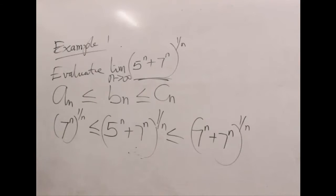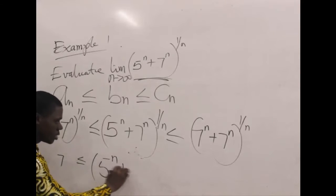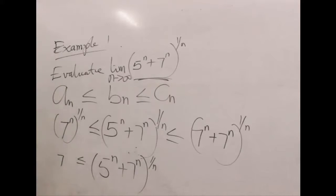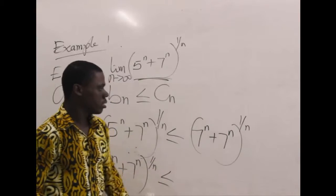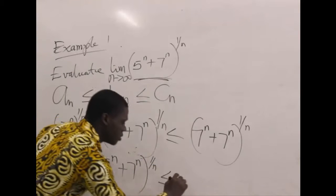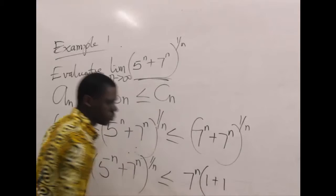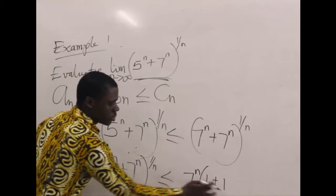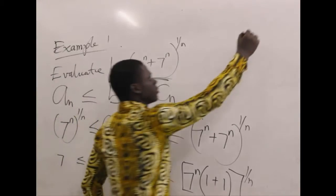Looking at this, we can simplify a little. From indices, we factor out 7^n from the upper bound expression. When we factor 7^n out, we are left with (1 + 1), which is 2, multiplied by 7^n raised to the power 1 over n. So we have not made any significant changes to the expression.